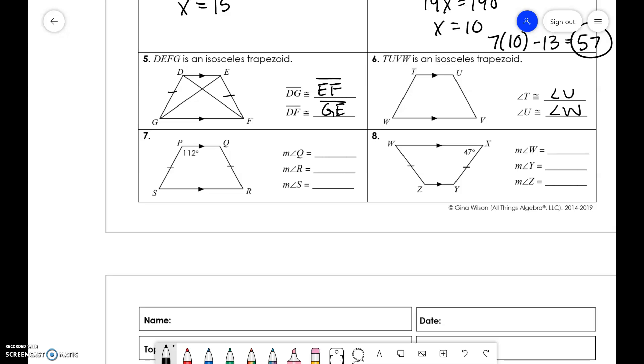For angle S, I'm going to find first because I know that P is 112. So, that means S is going to be 180 minus 112, which is 68. Base angles are congruent. So, that means S and R are the same. And knowing that this is 68 and these two are supplementary, this leads to the same thing.